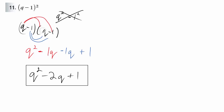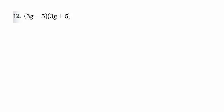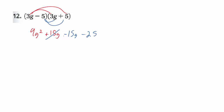There is a shortcut for doing this where you recognize 2q is twice the product of the two terms. For number 12, we're still doing distributive property. Distribute the first factor — you get 9g squared plus 15g. Distribute the negative 5 and get minus 15g minus 25. If you notice, because these are two conjugates — same terms, different signs — you can expect the middle to cancel out. So that's 9g squared minus 25.